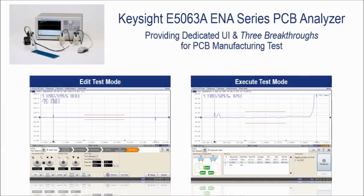The Keysight E5063A ENA series PCB analyzer can solve the accuracy problems of PCB impedance tests. The E5063A PCB analyzer is designed with a dedicated user interface to perform PCB impedance tests in manufacturing. The edit test mode enables engineers to easily create and modify test files via the integrated test file editor with a few mouse clicks. A simple and intuitive user interface in execute test mode allows non-technical operators to perform PCB impedance tests.